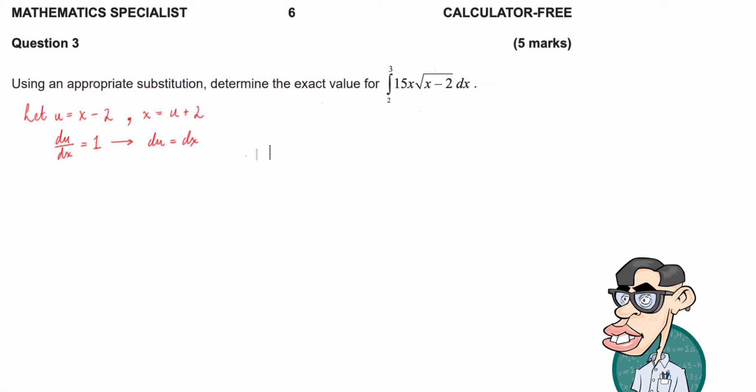Now before we even do any more substitution I'm going to have to change my bounds of integration. Now guys I would try and do this as early as humanly possible just so you don't forget. In an exam style scenario it's very likely that you could just accidentally not change your bounds of integration and usually if you're looking at a marking key it will be the first mark that they give you. Number one check that they've changed the bounds of integration.